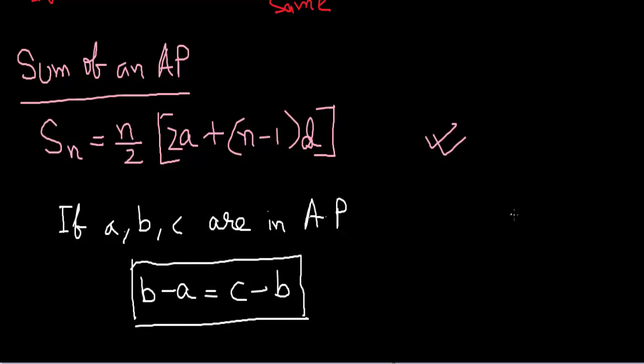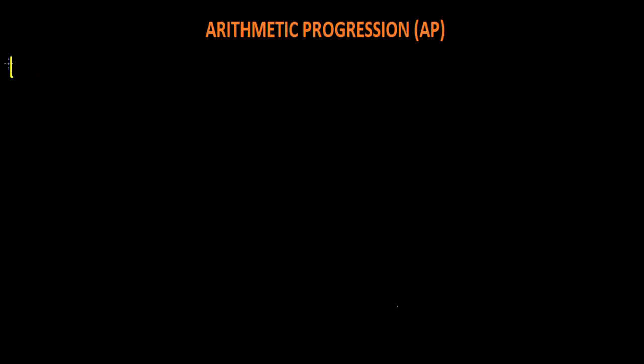If you see that 3 numbers are in AP, the pattern will be something like this: a minus d, a, a plus d. And similarly, if 4 numbers are in AP, we can find out for that. For any series, the T of N will be given as S of N minus S of (N minus 1).